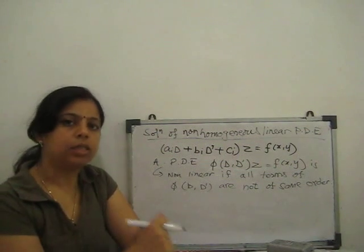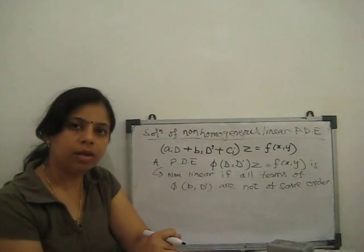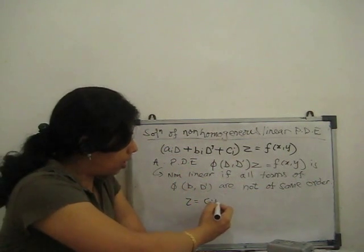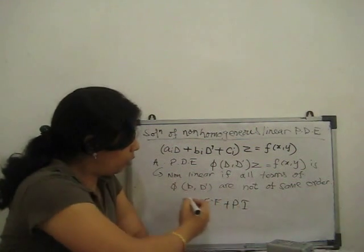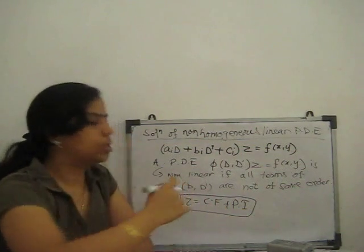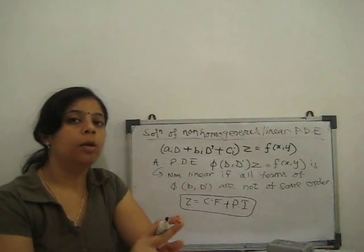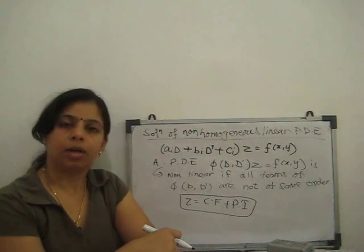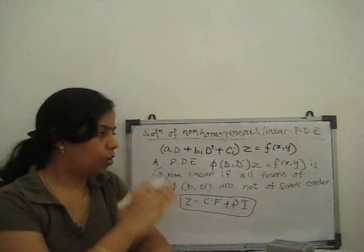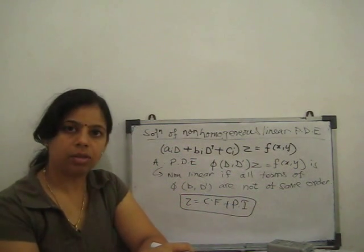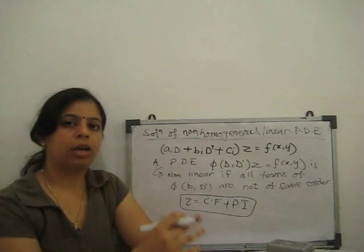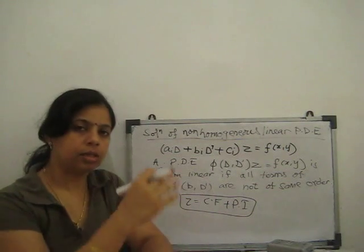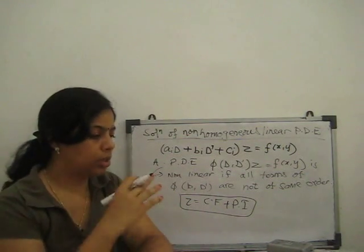The solution is the same as before: complementary function plus particular integral, z equal to CF plus PI. So the solution has two parts — complementary function and particular integral. But in this case, both writing the complementary function and finding the particular integral are different. For homogeneous there is one method, for non-homogeneous there is another.